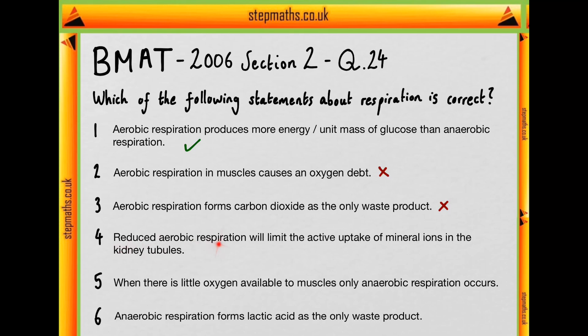Moving on to four: reduced aerobic respiration will limit the active uptake of mineral ions in the kidney tubules. Aerobic respiration generates ATP, and ATP is required for the active uptake of mineral ions in the kidney tubules because they use sodium-potassium ATPases and a range of other pumps and carrier proteins which require ATP from aerobic respiration. So if aerobic respiration is reduced, so too will the active uptake of mineral ions.